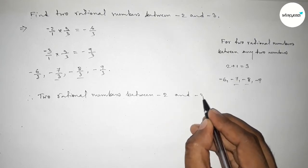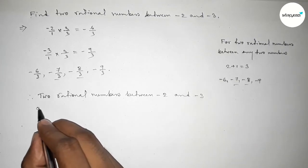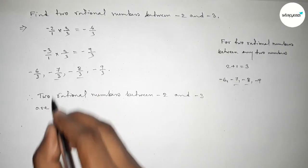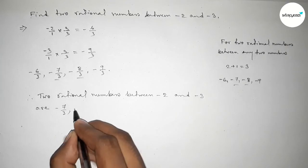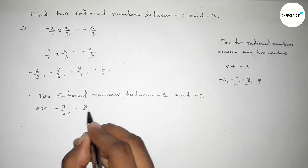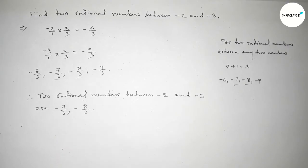So the first one is minus 7 over 3 and minus 8 over 3. You can find these out by another method as well. That's all — thanks for watching, please share it with your friends.